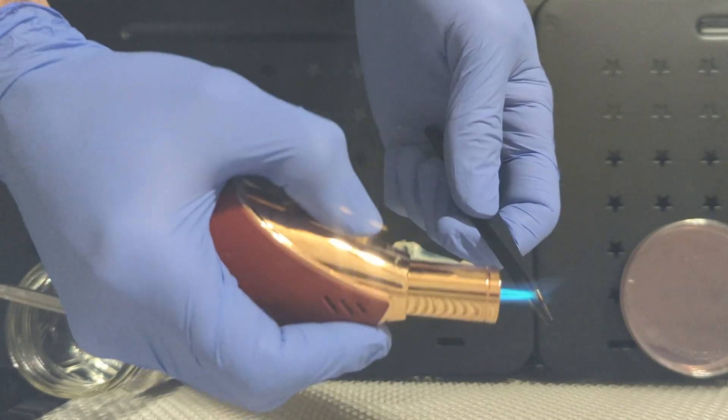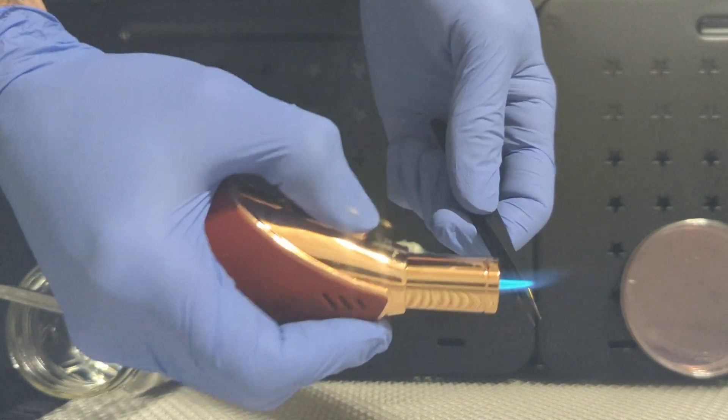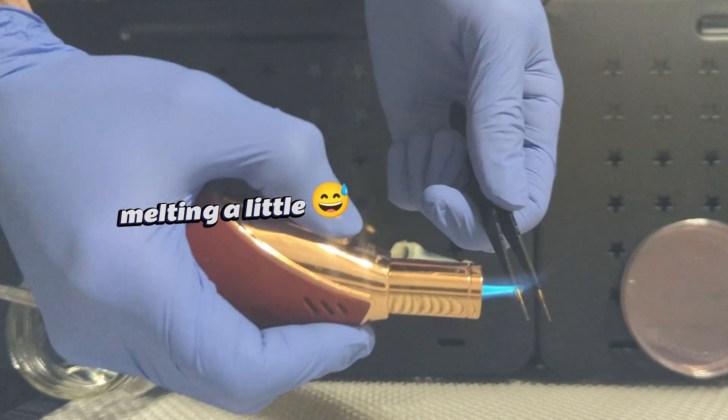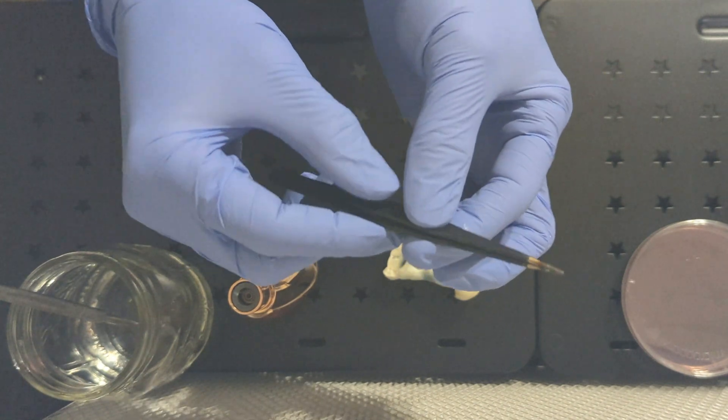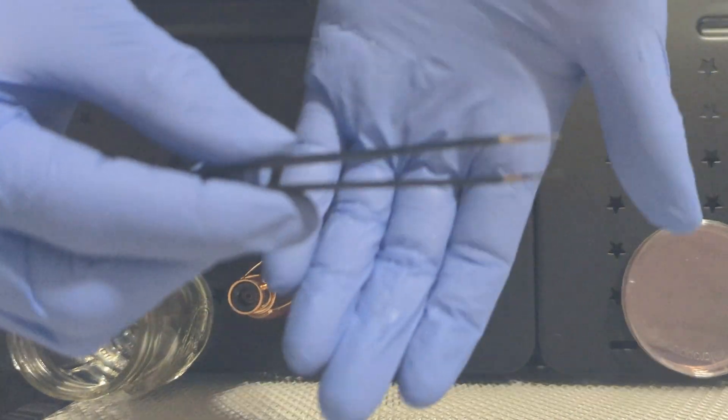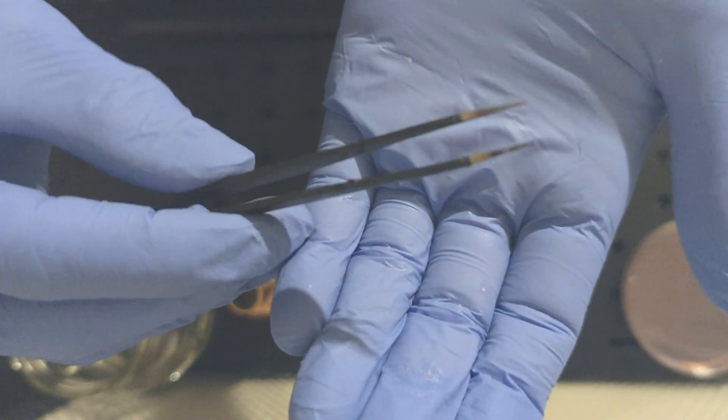To sterilize them with the butane lighter, you just heat the tips up until they turn a glowing red color. Once it's flame sterilized, you want to make sure it cools off enough that it won't kill the mycelium that you're trying to clone.